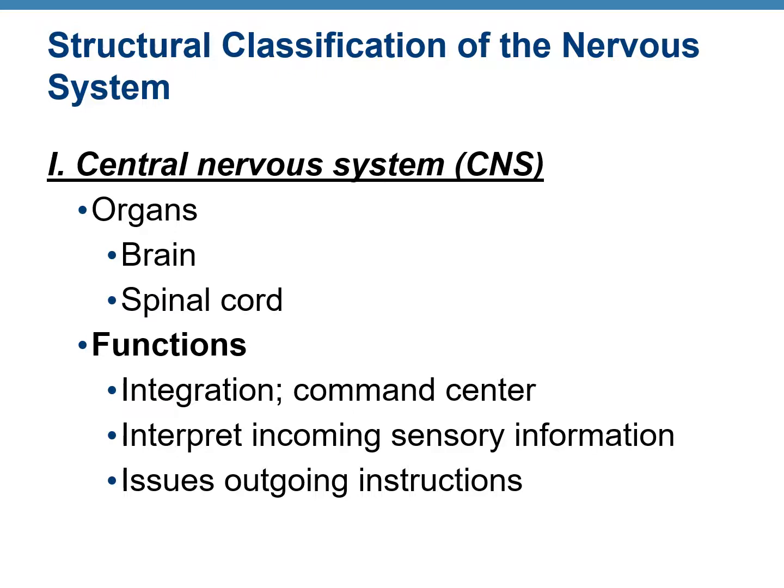The nervous system can be classified based on structure into two categories. The first is the central nervous system, or CNS, and the second is the peripheral nervous system, or PNS. The CNS includes the brain and the spinal cord, which are mainly the integration and control centers. They receive the sensory input, process the information, and issue the outgoing orders or commands.